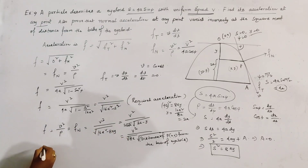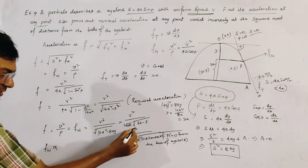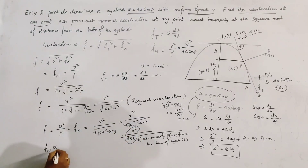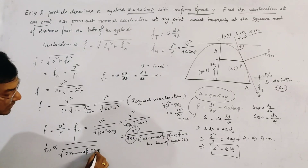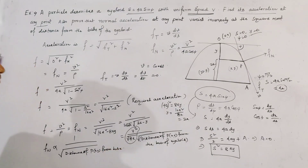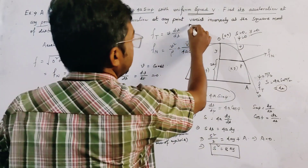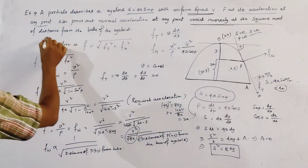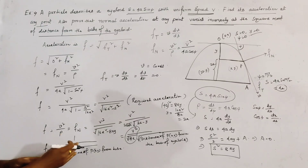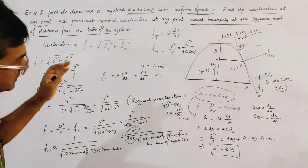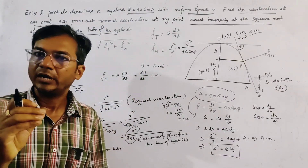Since v²/√(8a) is a constant, we can write that normal acceleration fn varies as 1/√(distance of P from the base). This is our second proof: fn varies inversely as the square root of the distance of the point from the base of the cycloid. This completes the solution of the problem. Thank you very much.